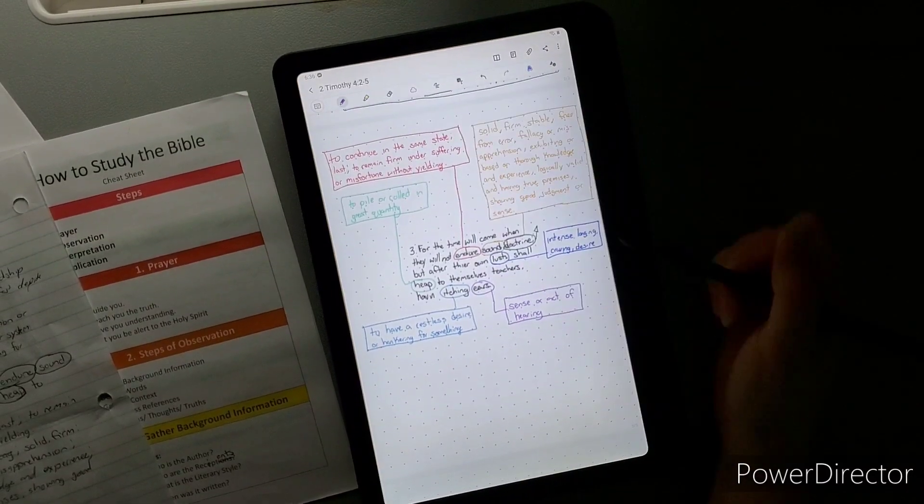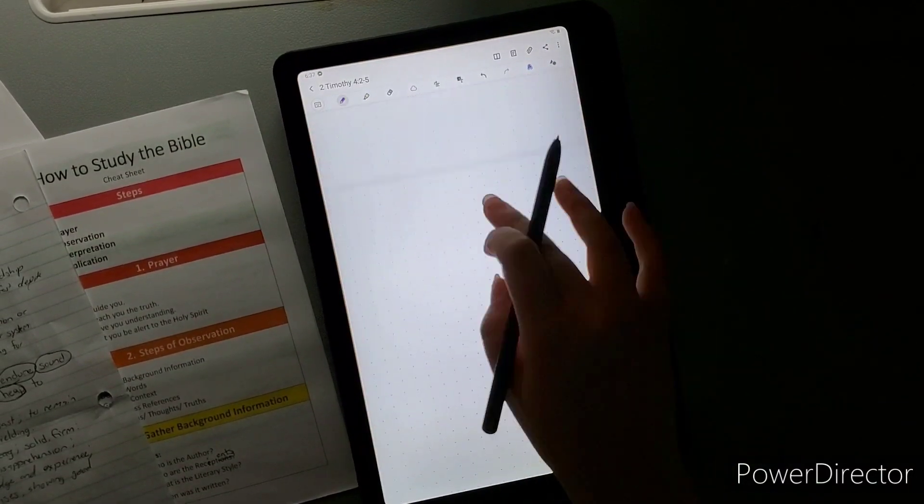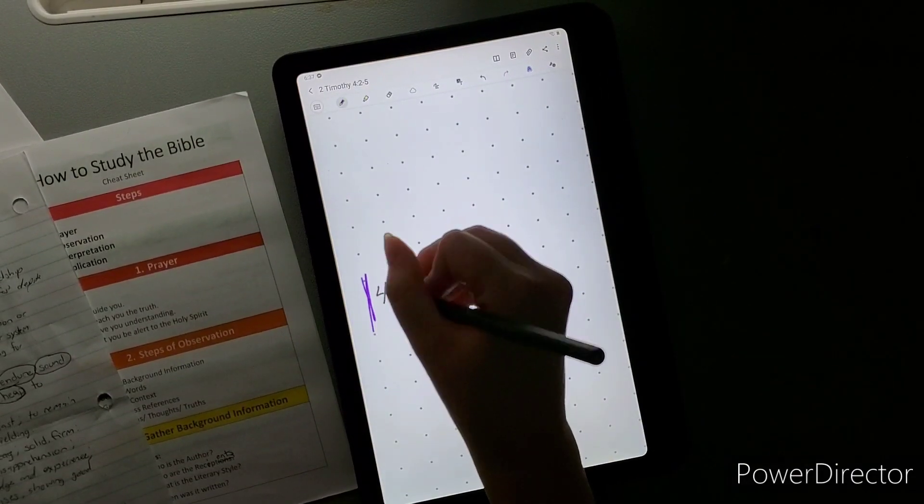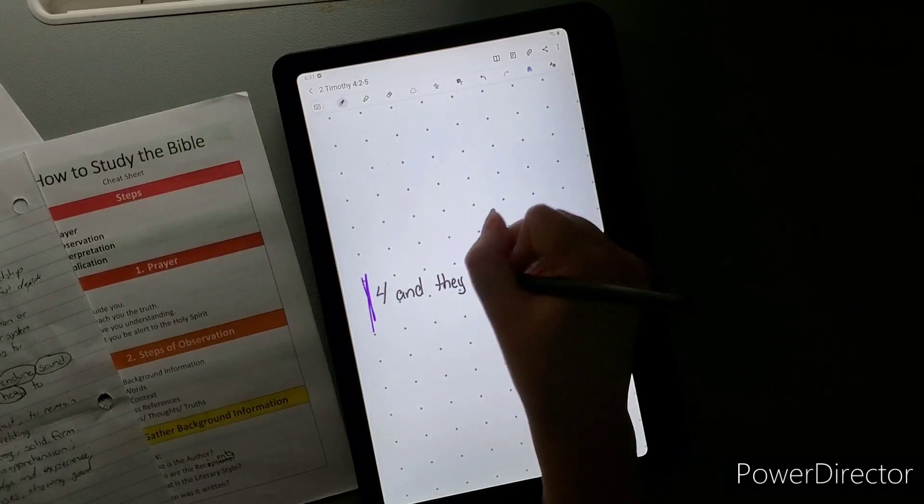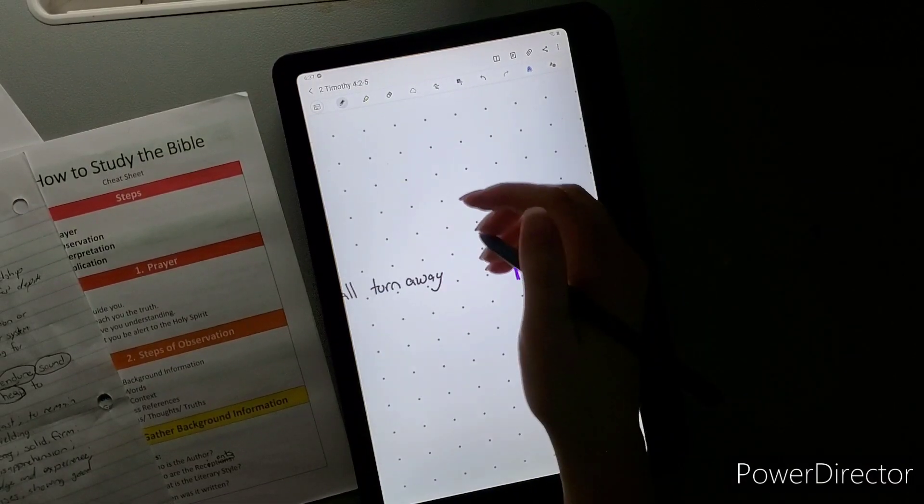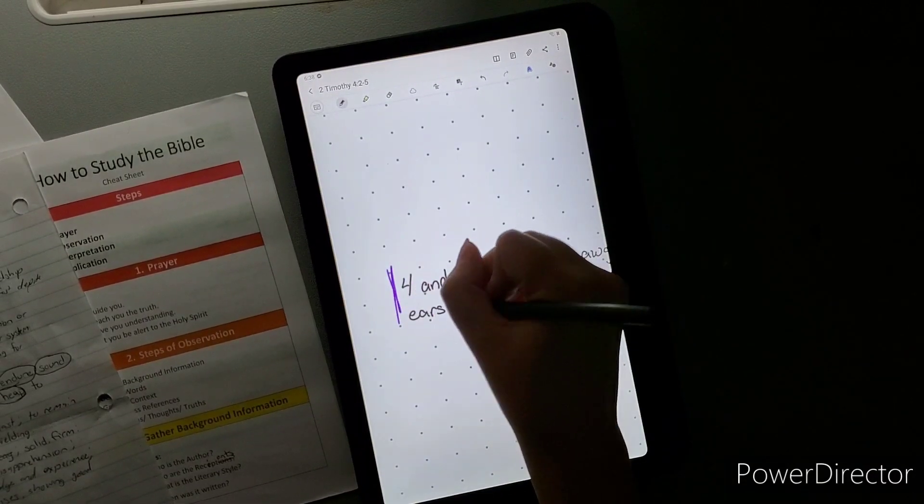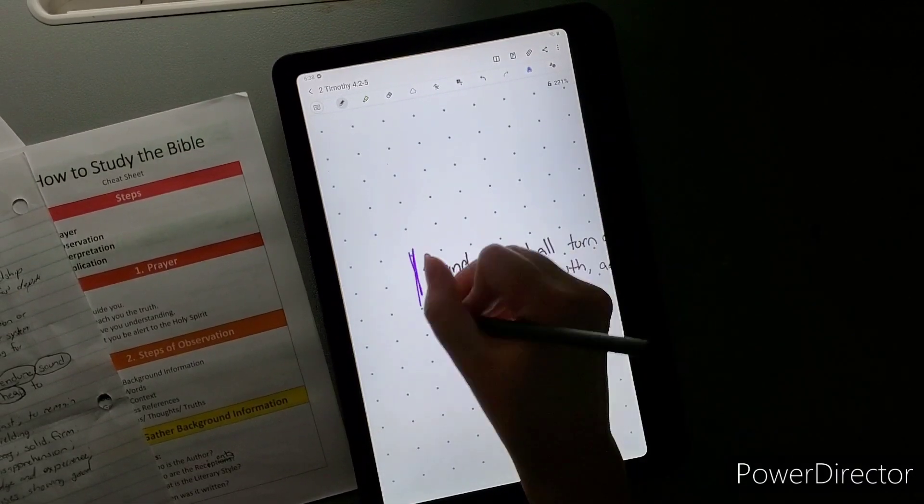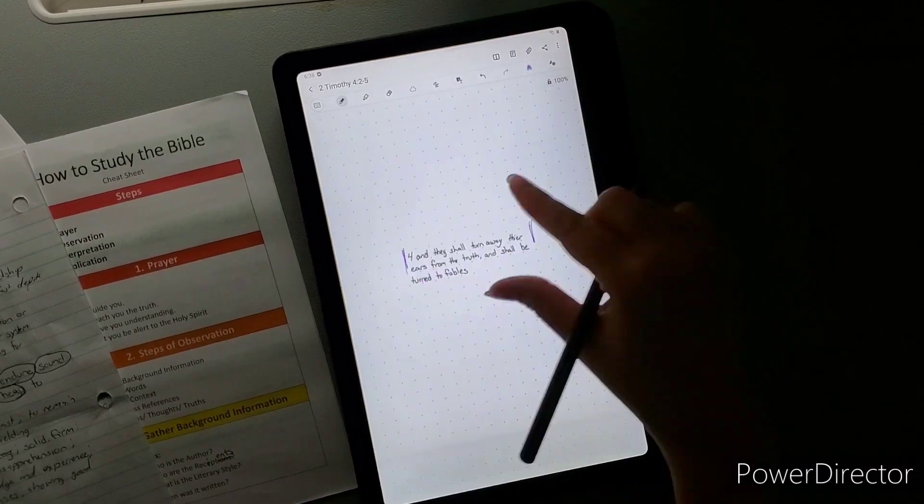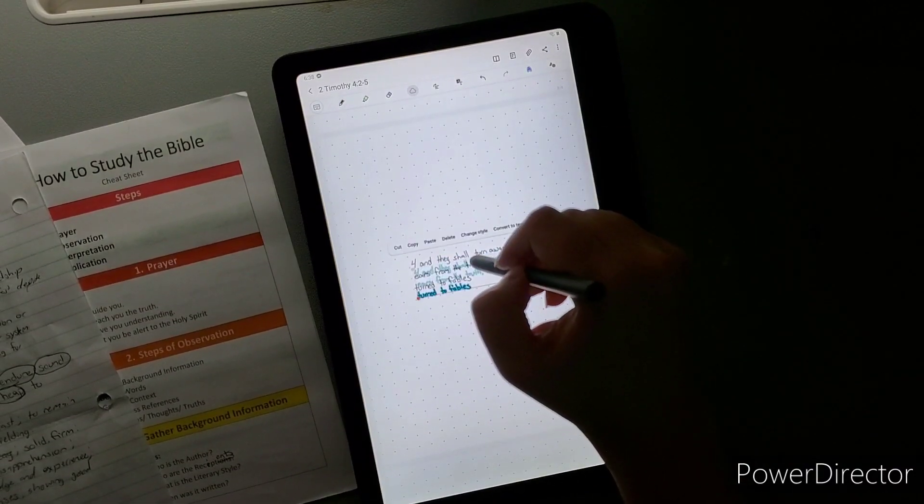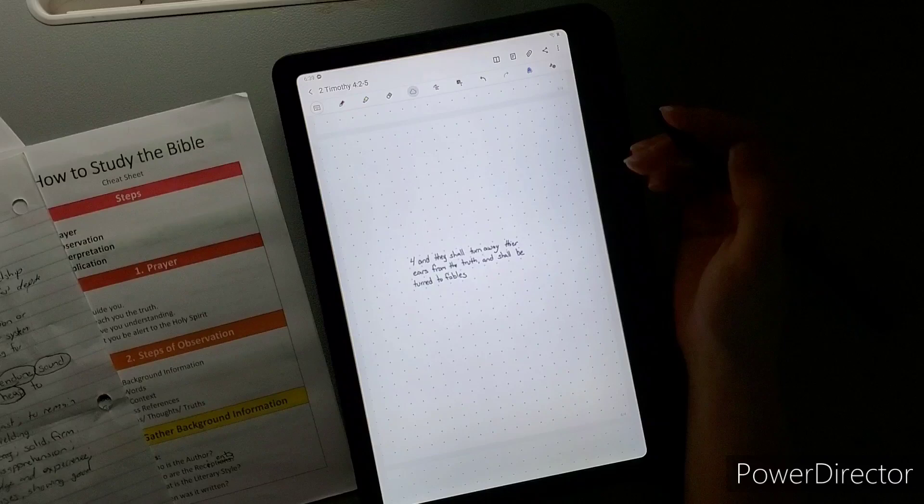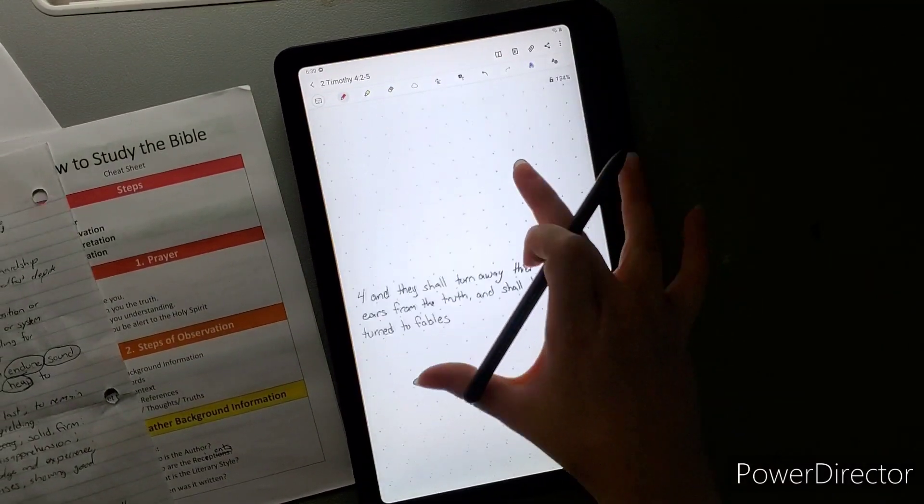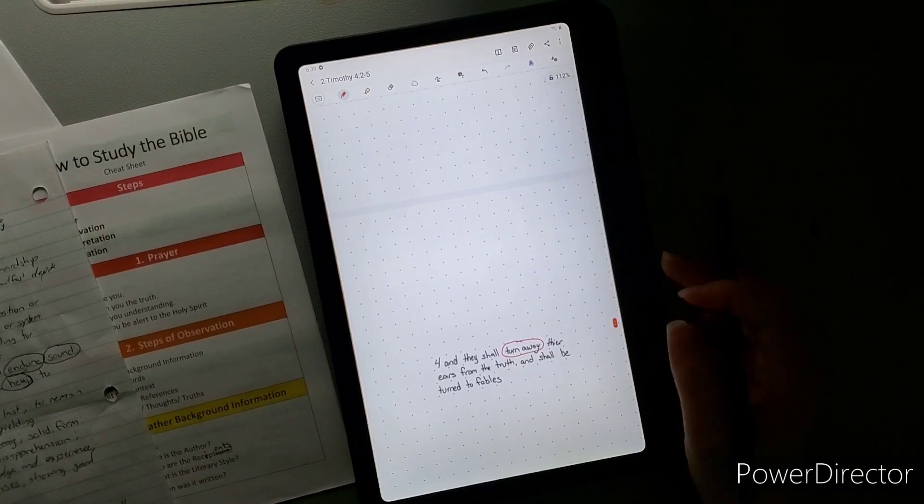Verse four: and they shall turn away their ears from the truth and shall be turned to fables. Turn away is to refuse admittance or acceptance, to reject, dismiss, depart. So they're going to just probably dismiss and reject things that they are hearing. They don't even want the truth. The truth is the body of real facts events, the property of being in accord with fact or reality. They don't care about reality, they don't care what's really true.